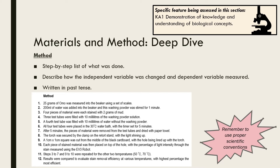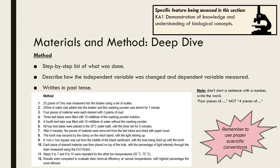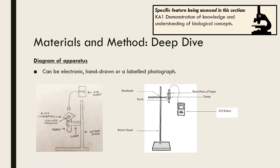Another important element to point out is that if you are starting a sentence with a number, you need to write the word for the number, not just the numeral. So 'four pieces of', not the numeral 4 and then 'pieces of'. Your diagram of apparatus can be hand drawn, electronic, or a labelled photograph. Just make sure that it is clear, showing all of the important components, and of course, make sure it's labelled.